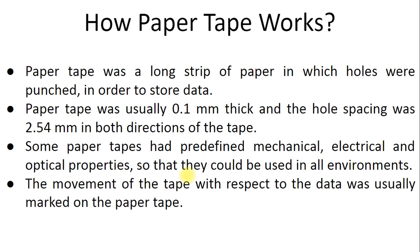Paper tape was usually 0.1 mm in thickness - very thin. The hole spacing was 2.54 mm in both directions of the tape. Some paper tapes had predefined mechanical, electrical, and optical properties so that they could be used in all environments.